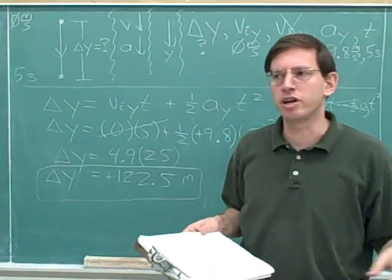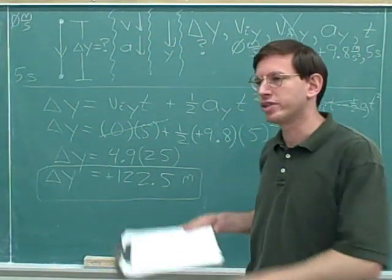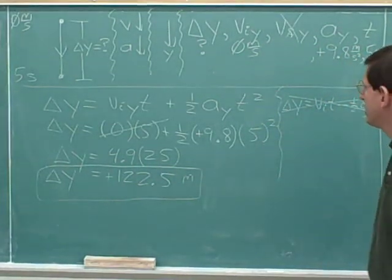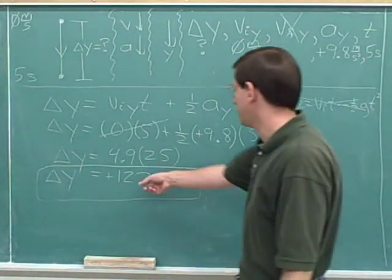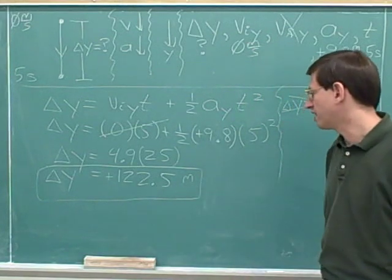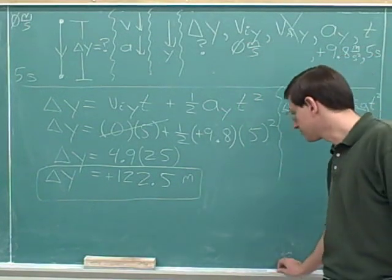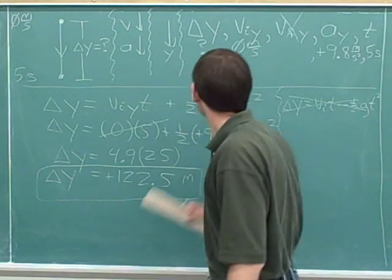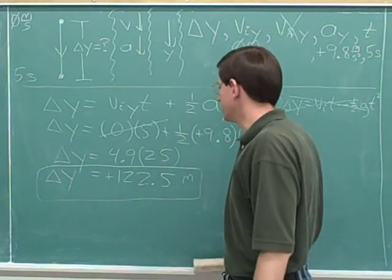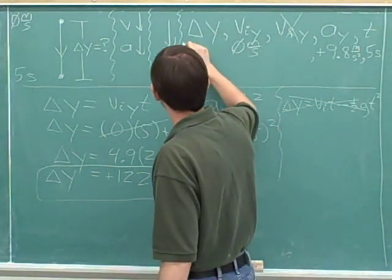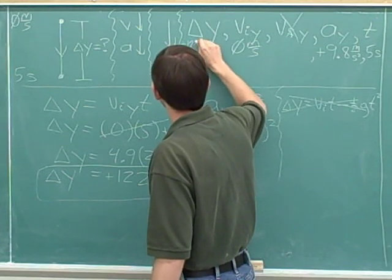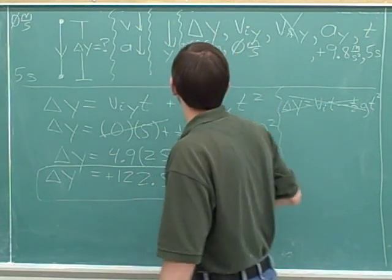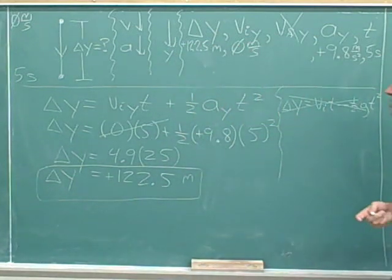I'm going to pose another problem for you about the problem we just finished. Remember that we figured out that the displacement was going to be 122.5 meters in the positive direction. So now we can go back and label that as our new delta y: positive 122.5 meters.